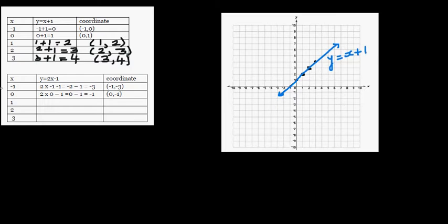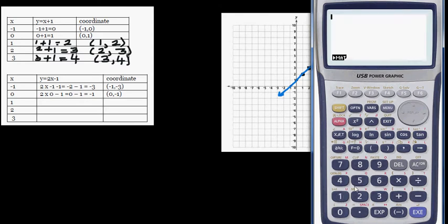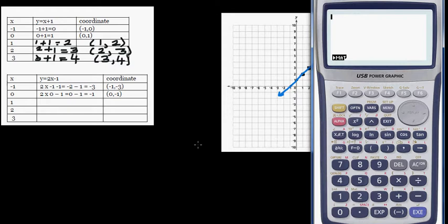Now let's look at one more question. The second equation is Y equals two X minus one. When you put negative one into this equation, it is two times negative one take away one, which is negative two take away one, which is negative three. So when X is negative one, Y is negative three.